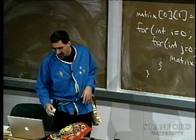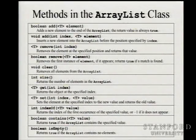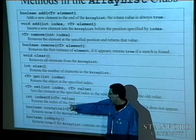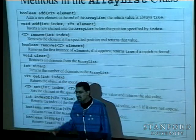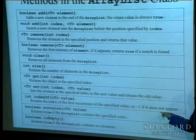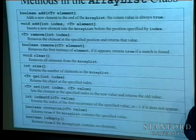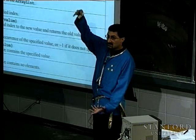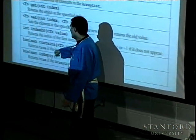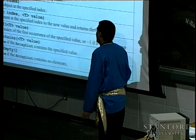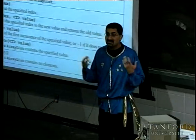Last but not least: 'indexOf(value)' does a search on the ArrayList, returning the index of the first occurrence of that value, or -1 if not found — just like indexOf on strings. 'contains(value)' returns a boolean — true or false — whether the value appears in the list. And 'isEmpty()' returns true or false to let you know if the ArrayList contains any elements at all.